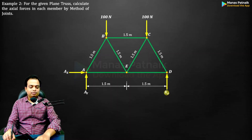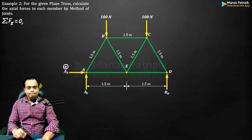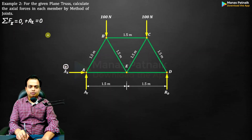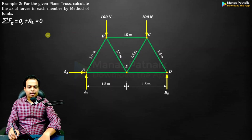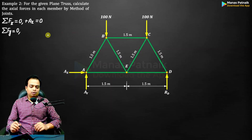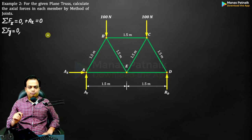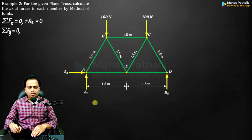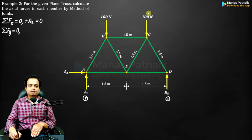Now let us talk about calculating those reactions. The first equation of equilibrium we apply is FX = 0. If you watch carefully, only one horizontal force is there, so AX equals 0. Secondly, we'll apply FY = 0. When you do FY = 0, the two reaction forces are positive (upwards) and the two 100 N loads are downwards — negative.